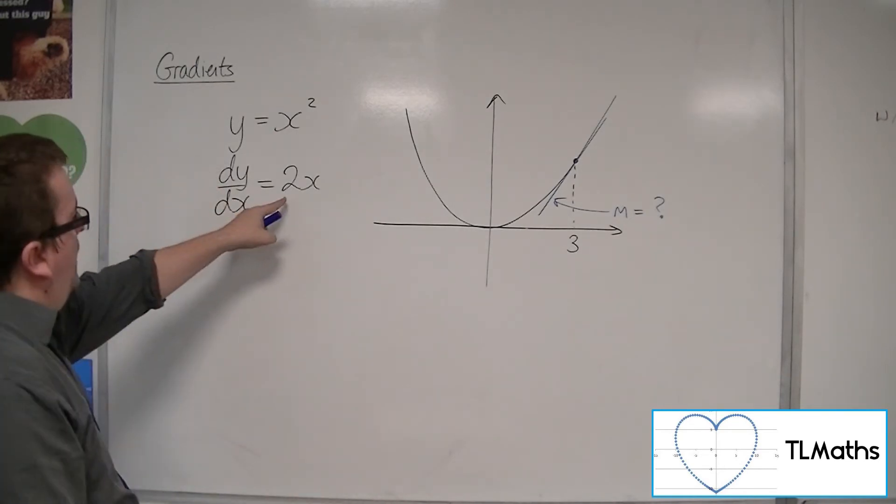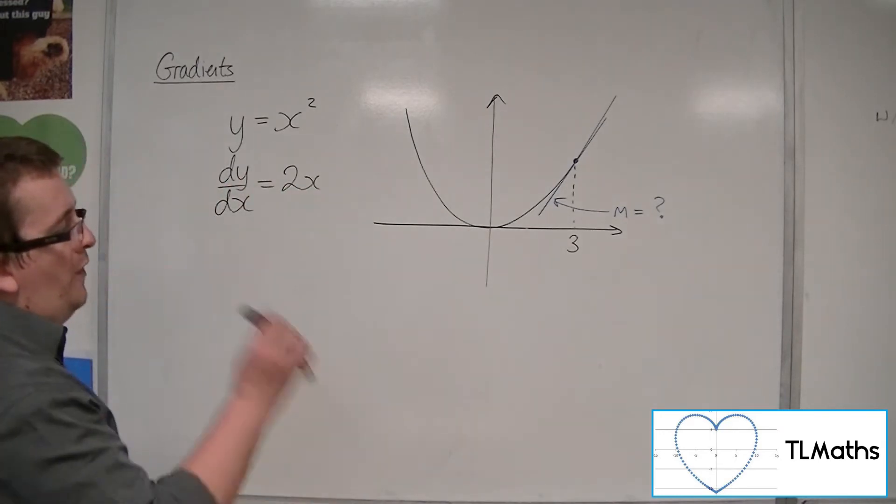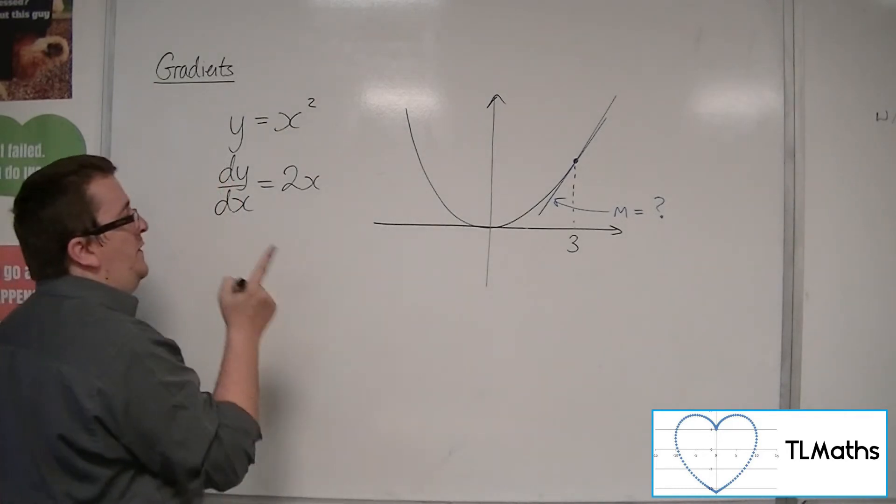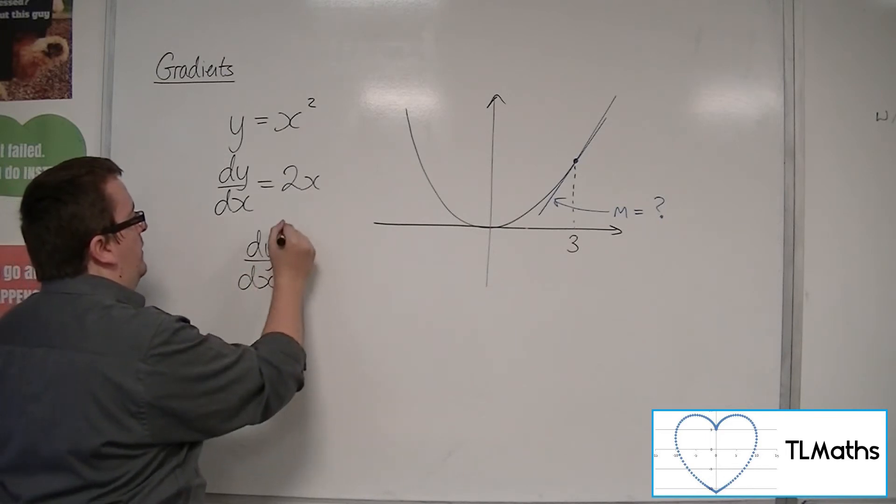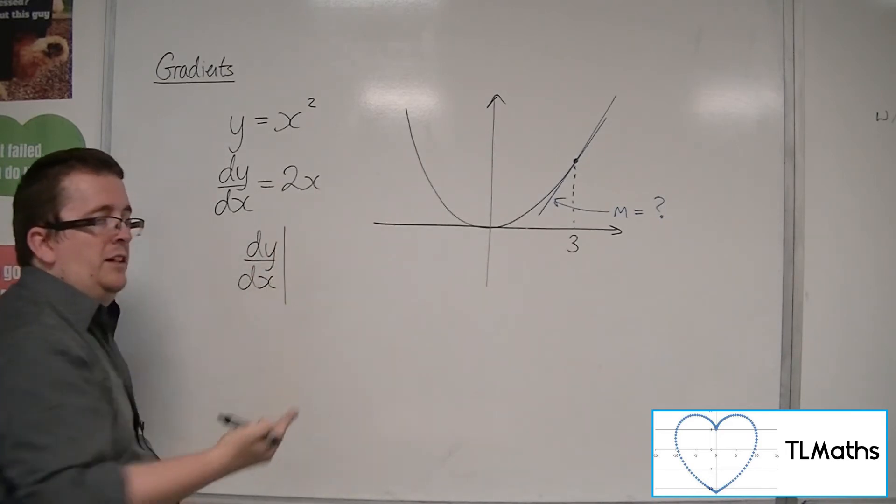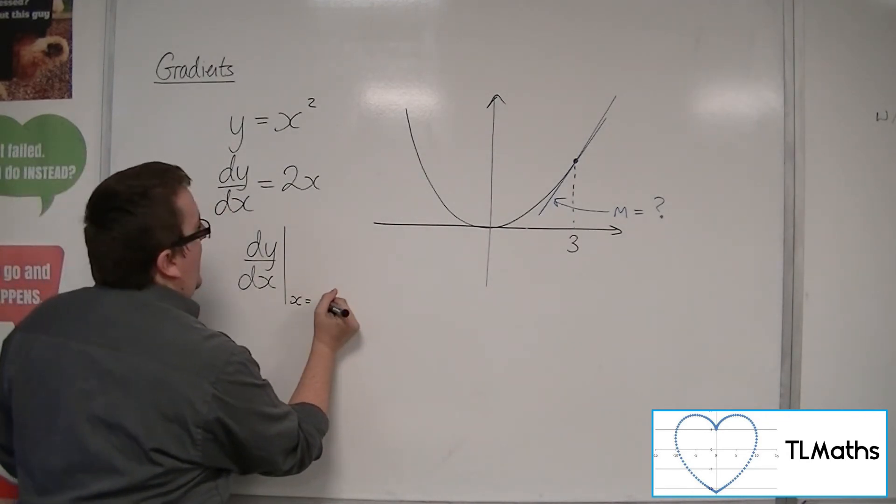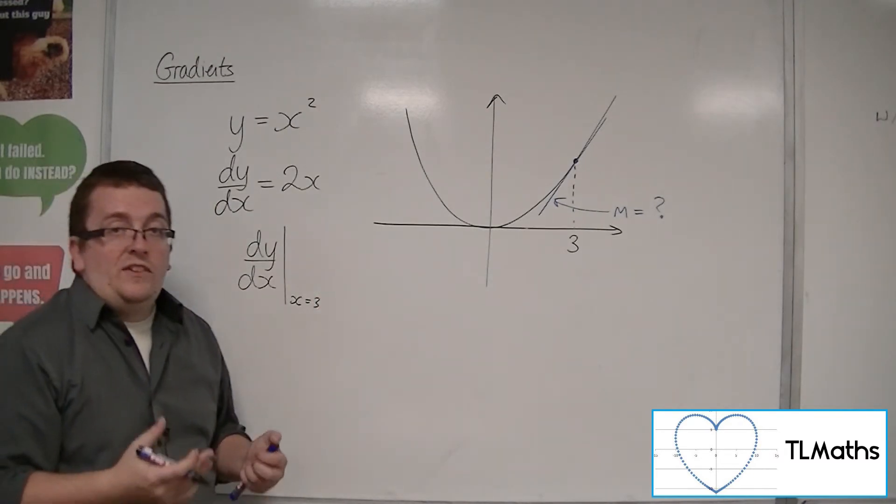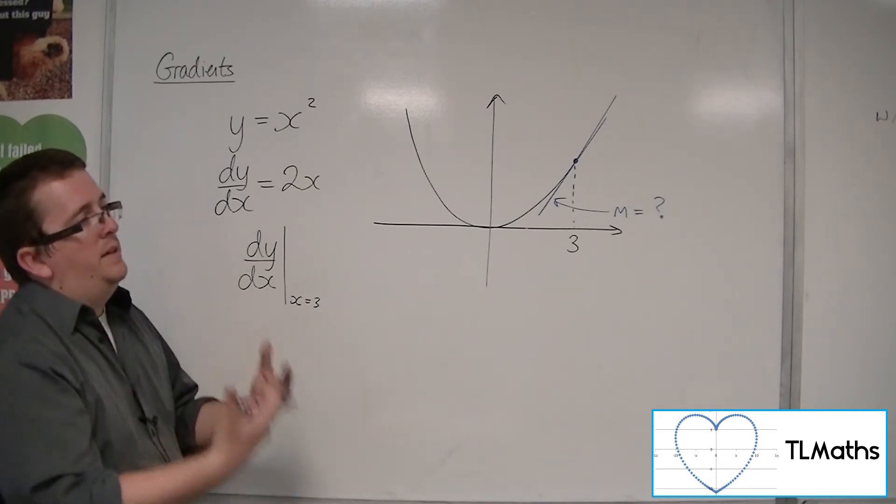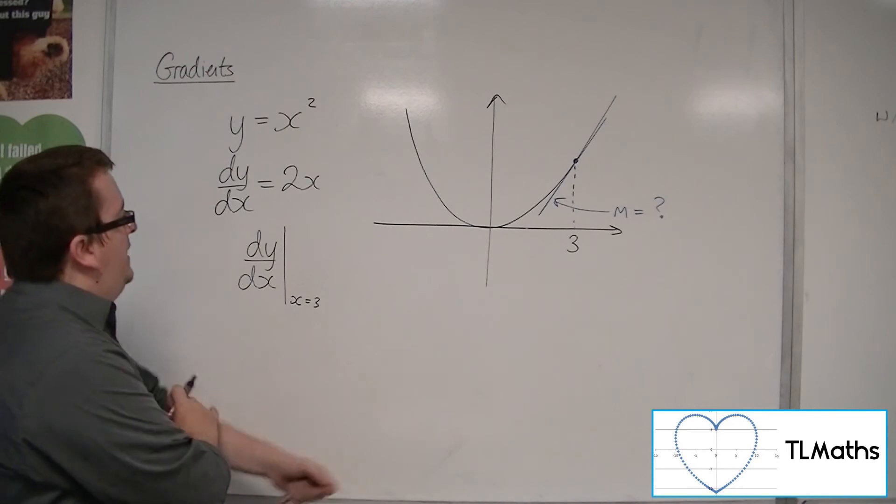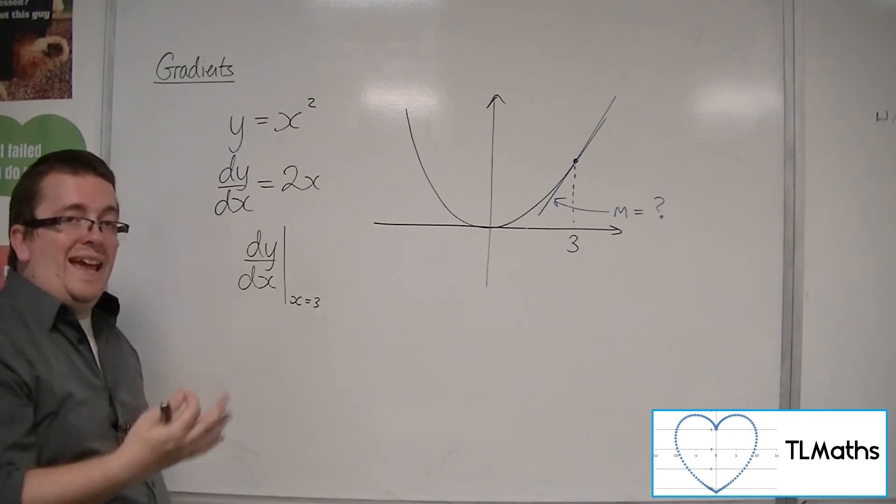So this function tells me the gradient of the curve at any point that I want. So if I want to specify and say I want to find the gradient of the curve at 3, we can say dy by dx, and we draw this vertical line and say I want to evaluate it when x is equal to 3. Really, this is just a shorthand notation, rather than saying when x equals 3, dy by dx equals. We can instead write this using a vertical line and substituting in effectively x equals 3.